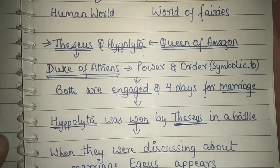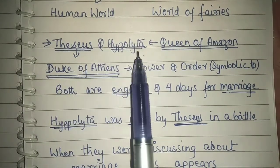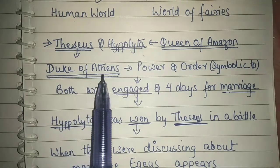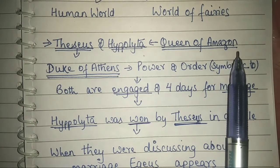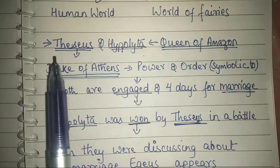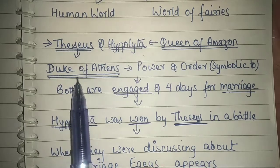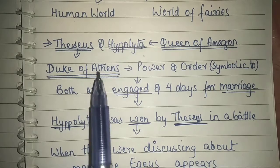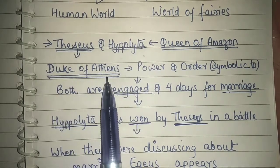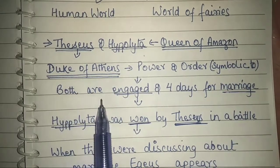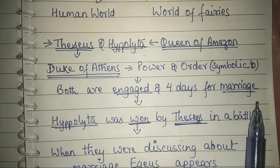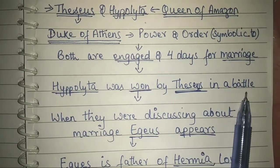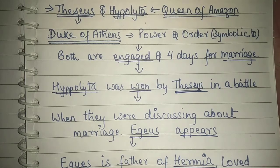The play starts with Theseus and Hippolyta. Theseus is the Duke of Athens — very powerful — and Hippolyta is the Queen of Amazon, who is equally powerful. The Duke of Theseus represents power and order. Both of them are engaged and within four days their marriage is going to occur. Hippolyta was won by Theseus in a battle, therefore their relationship is not much cordial.